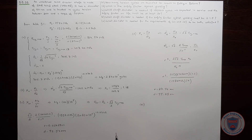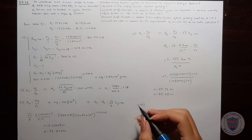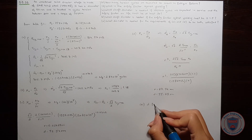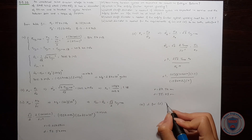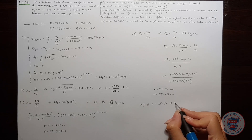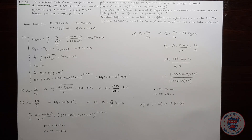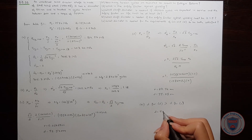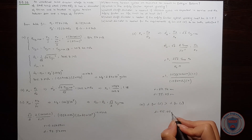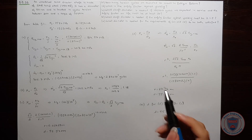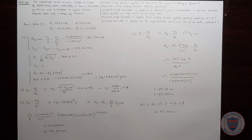For the requirements of Parts C and D to both be satisfied, we consider the largest diameter. Since the diameter for Part D at 55.08 millimeters is larger than the diameter for Part C, a diameter of 55.08 millimeters satisfies both requirements.